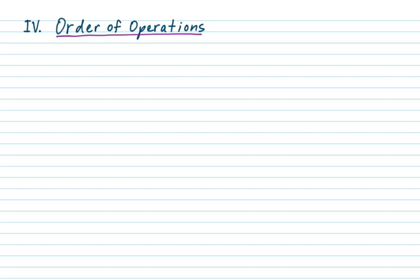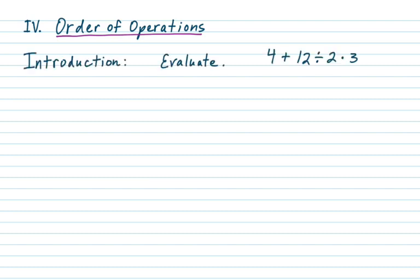In this video I'll be discussing order of operations. Let's start with an introduction — evaluate 4 plus 12 divide 2 times 3 and see what you get. Stop the video and check your answer. You may have gotten 24, perhaps 6, or 22 — hopefully not something else, but I've gotten lots of answers over the years on this problem.